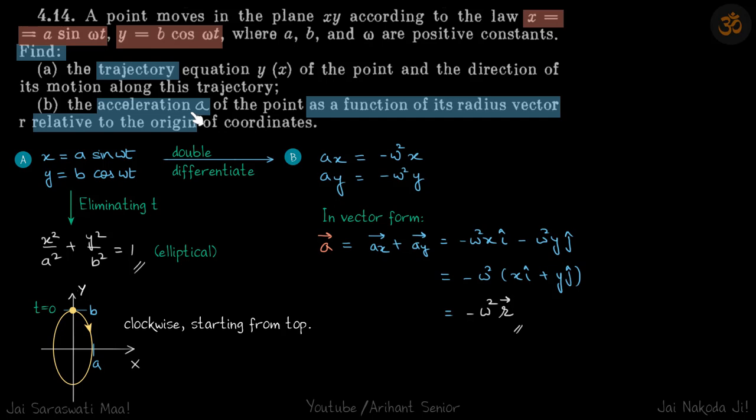Now for acceleration, we double differentiate to get ax and ay. So ax = -ω²x and ay = -ω²y. In vector form, we write ā = ax î + ay ĵ, which is -ω²(x î + y ĵ).